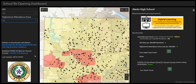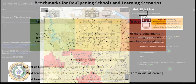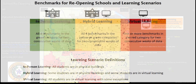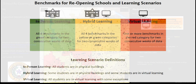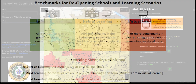The center column provides a map at the High School Attendance Zone level. The map is shaded by the Recommended Learning Scenario. Red represents virtual learning, yellow is hybrid learning, and green is in-person learning.